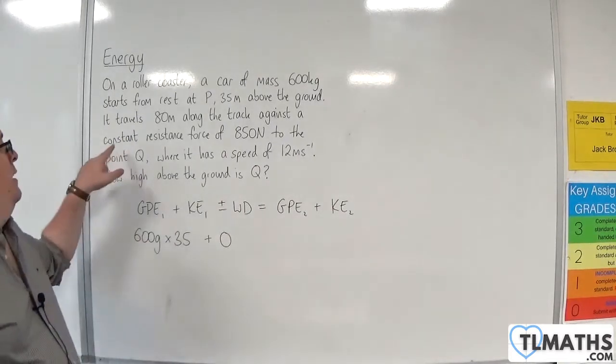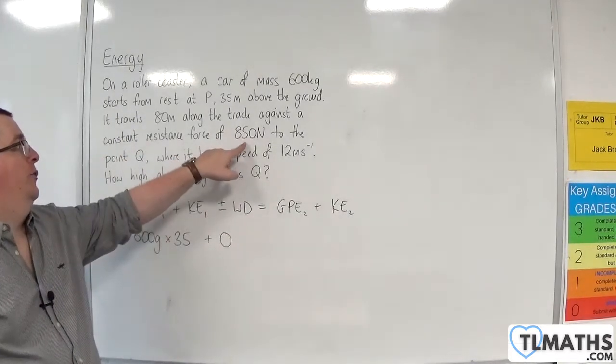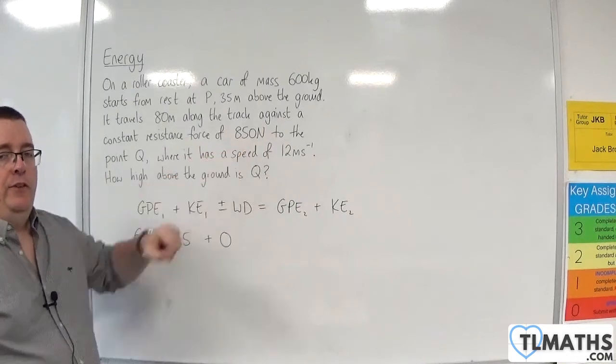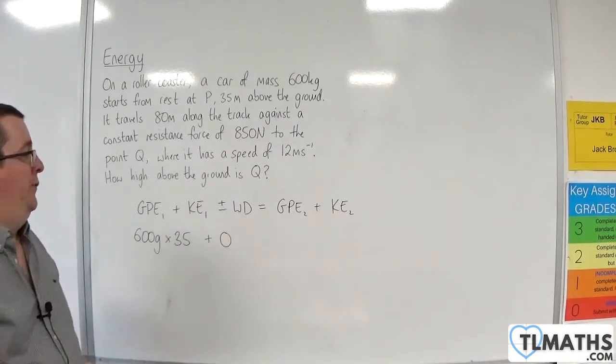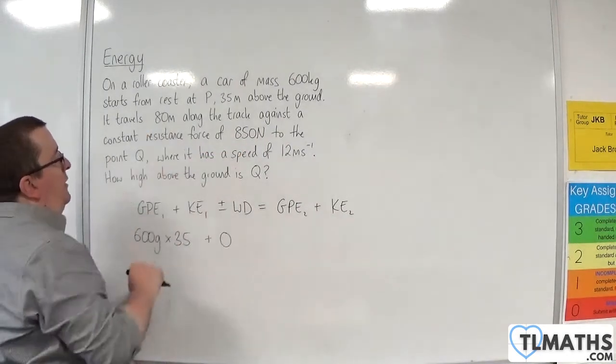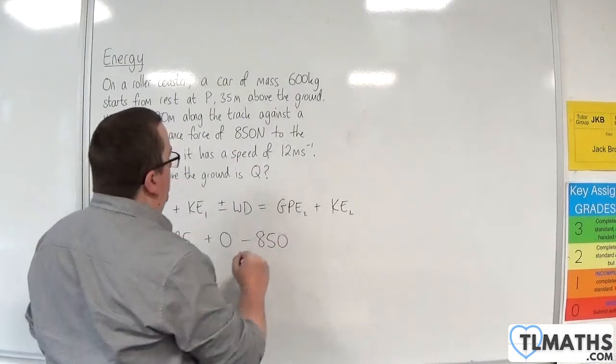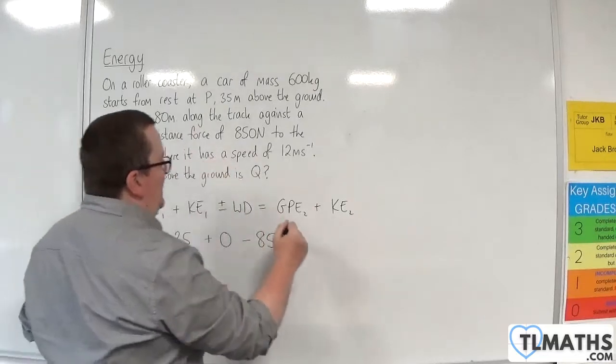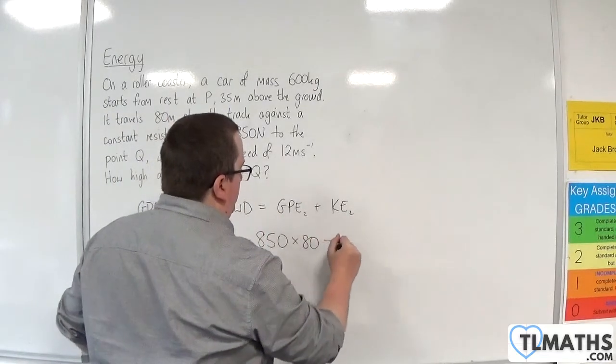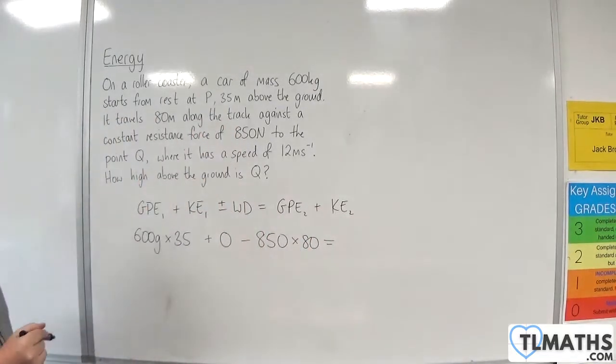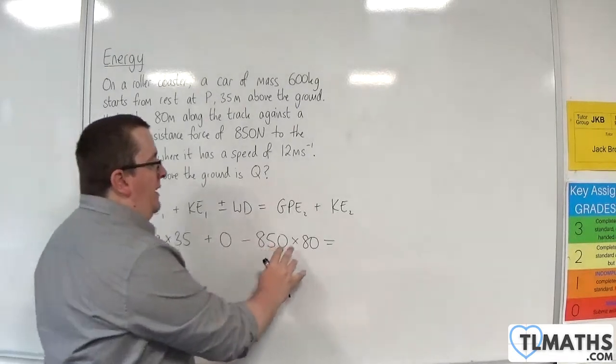Then we've got the work done. Now, we have this constant resistance force of 850 newtons. So that's going to be taking energy out of the system for 80 metres. So take away 850 newtons times by the 80 metres. And that's our only force that's acting in the direction of motion.